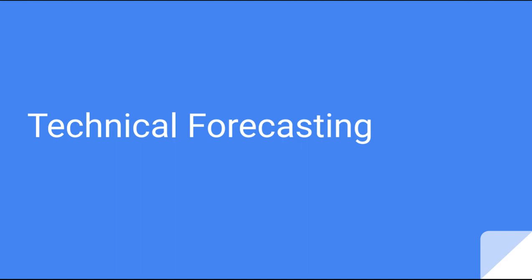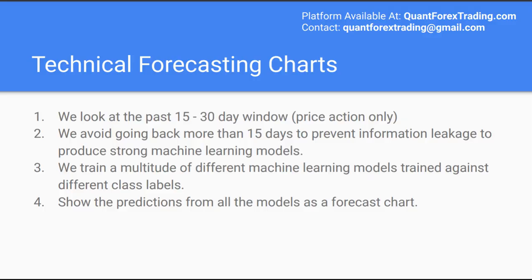We now move on to the third section of this course: deriving future market direction from current price action. Human traders generally conduct a similar analysis with technical indicators and trendlines. The QuantForextrading platform takes this one step further by using machine learning to make predictions regarding likely market movement from many different technical indicators combined in a multitude of machine learning models, which are again shown as forecast charts. Most technical models look at a historical 15 to 30-day window, and we generally limit the look-back window so predictions best capture current market movements. Such time windows produce a good indication regarding likely market movement over long timeframes when combined with economic forecasting.